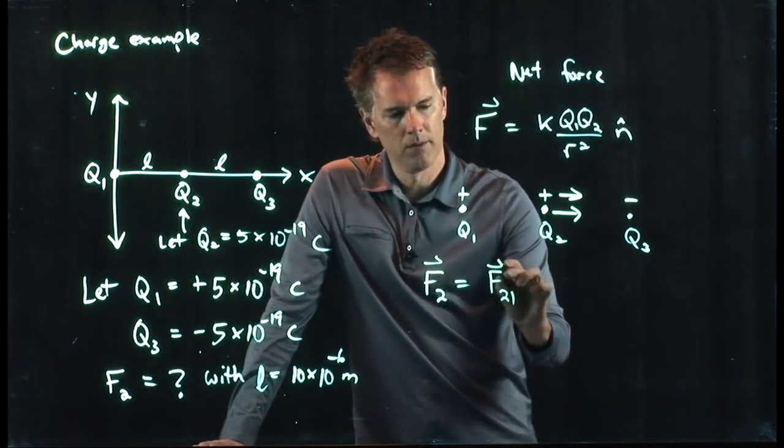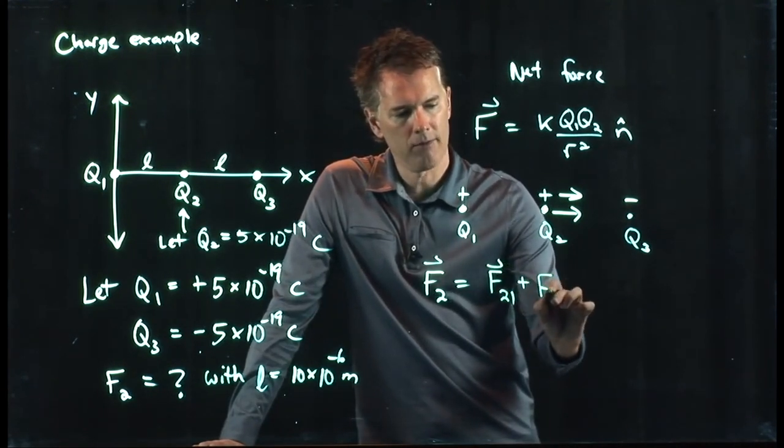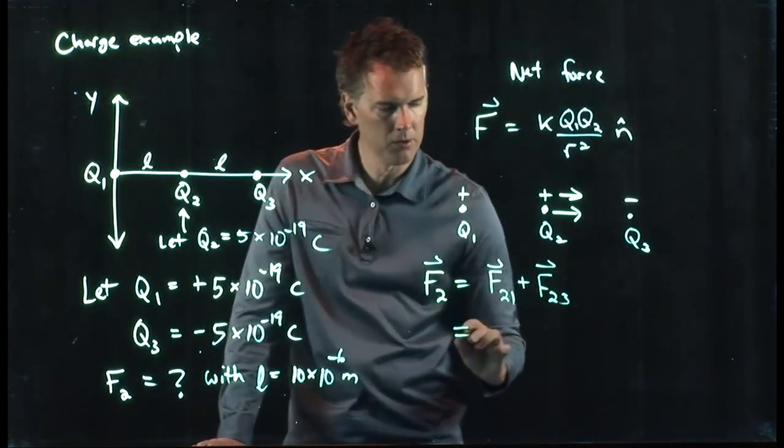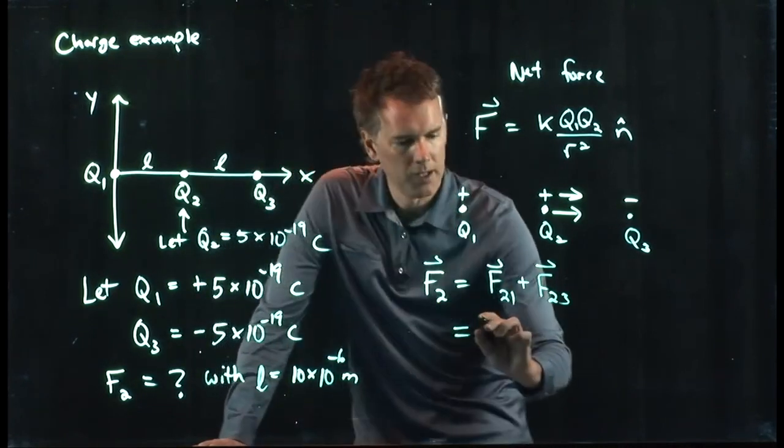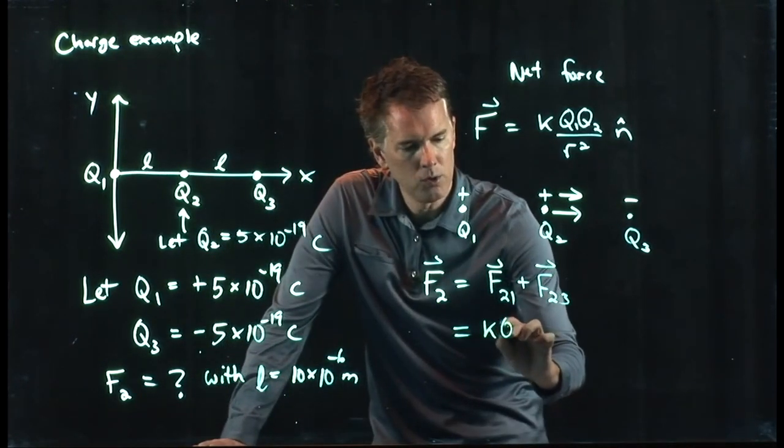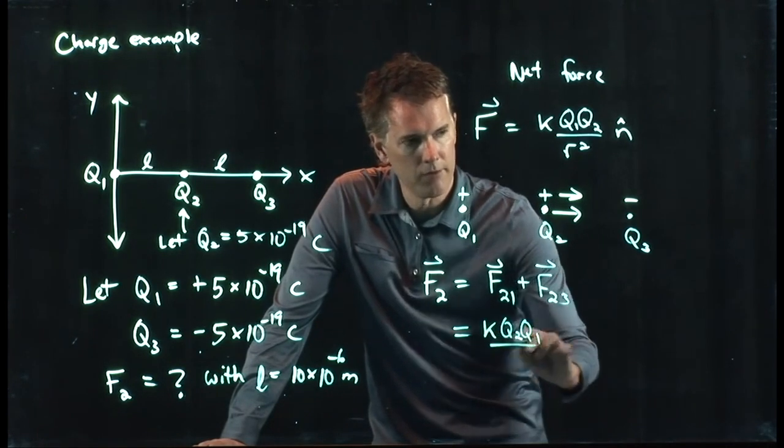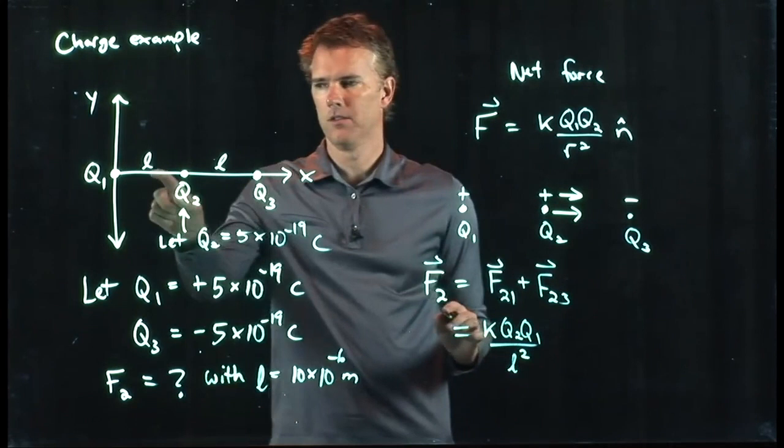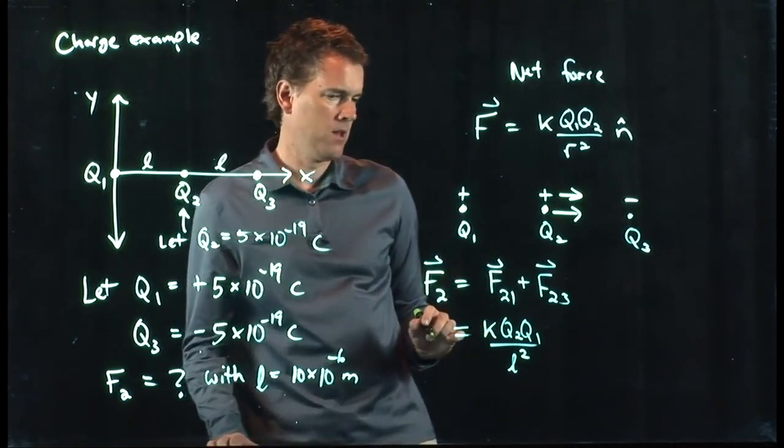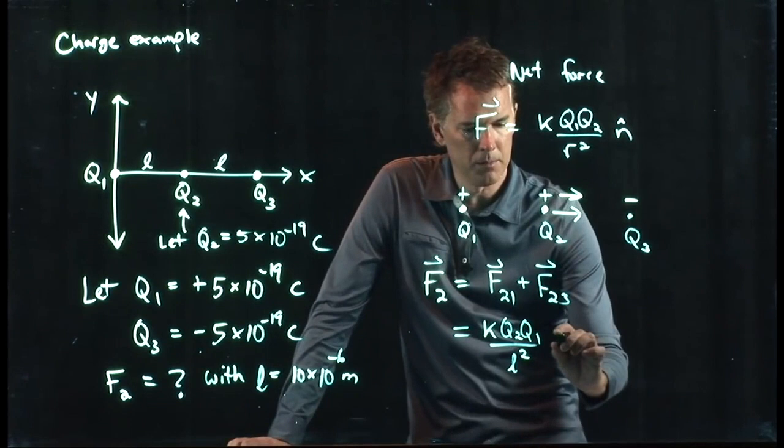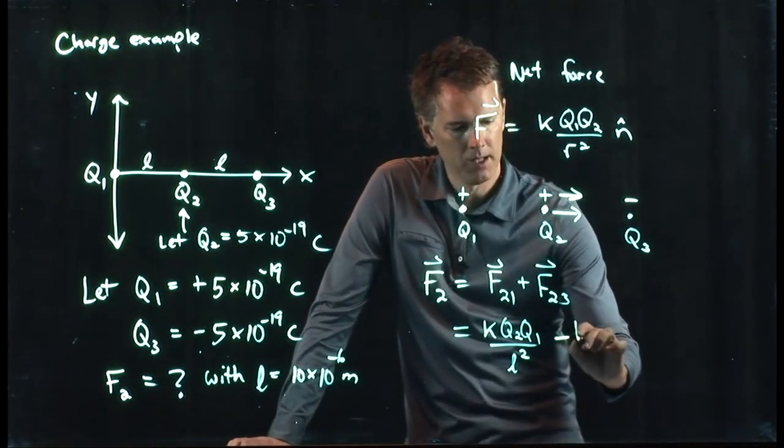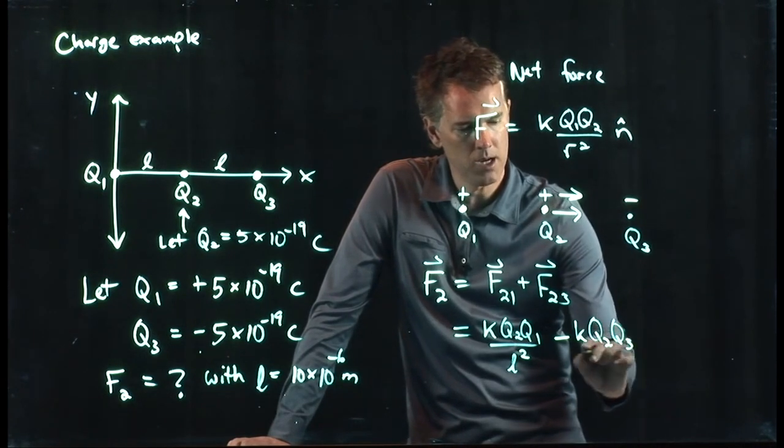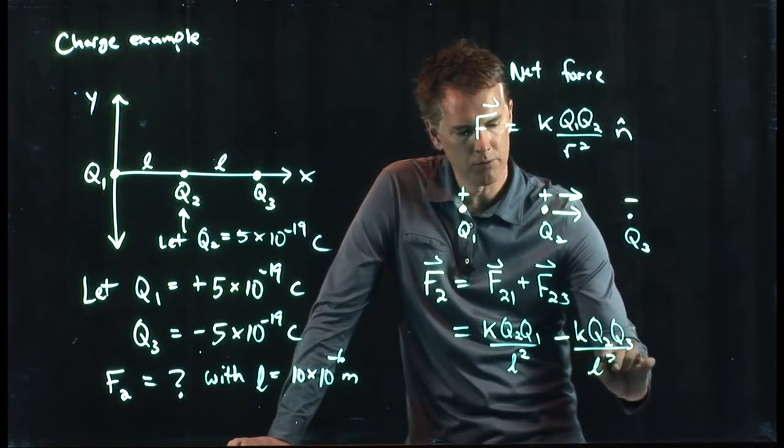It's going to be F on 2 due to 1 plus F on 2 due to 3. And now we know exactly what those are. It's k q2 q1 divided by L squared, right? We said the distance we called L. And then the other one is going to be minus k q2 q3 divided by L squared.